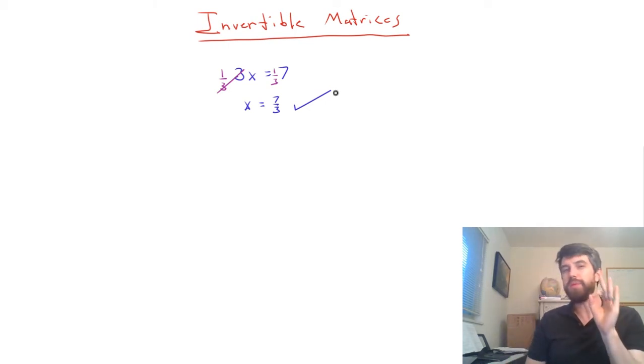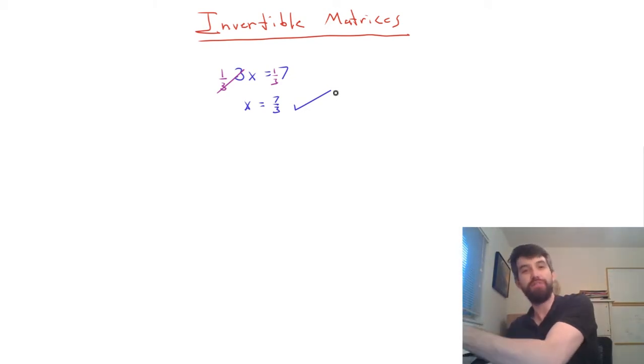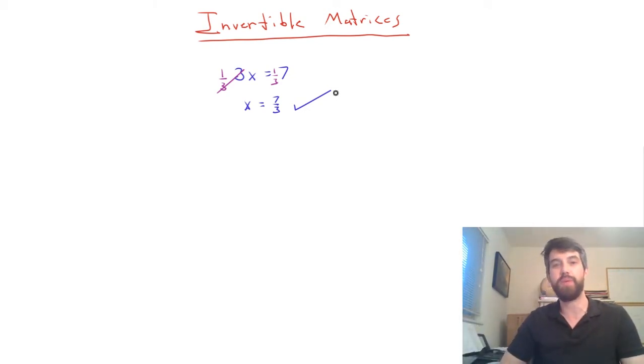Now, I want you to think about the relationship between 3 and 1 third. Because they're something we refer to as being multiplicative inverses. 3 and 1 third, they sort of cancel and become the number 1. And then, if you can cancel what you have in front of the x, this is sort of what we think of as isolating the x, and then whatever you have left over on the other side, that's going to be your answer.